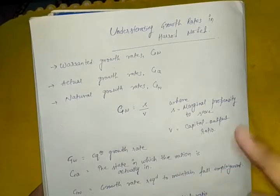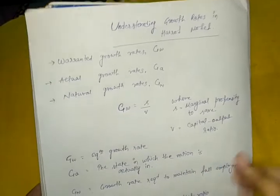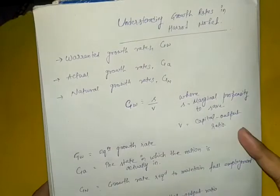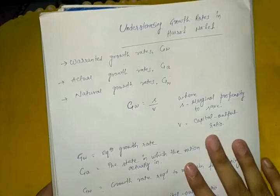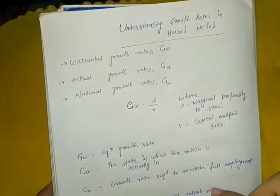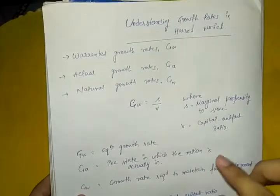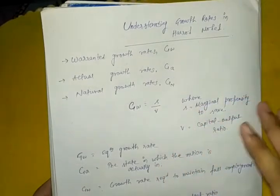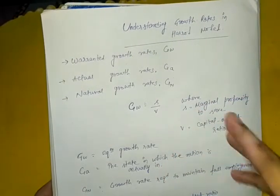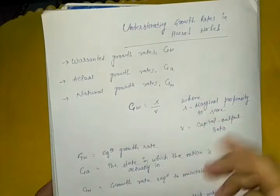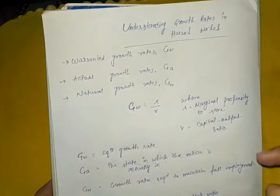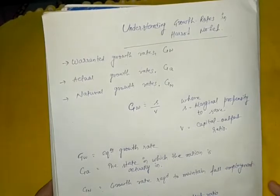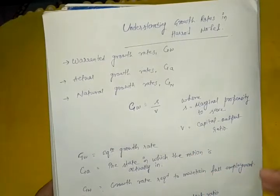I also discussed the Harrod model assumptions in my previous video, so go watch that first and then continue with this video. Now let's start with the warranted growth rate. If you've gone through different books, you might have seen that the warranted growth rate is simply defined as the equilibrium growth rate in which investors are fully satisfied by investing their money into the business.